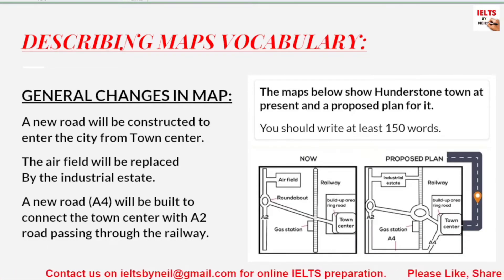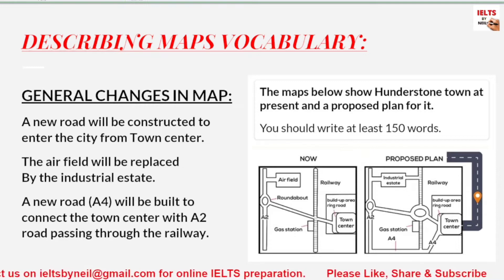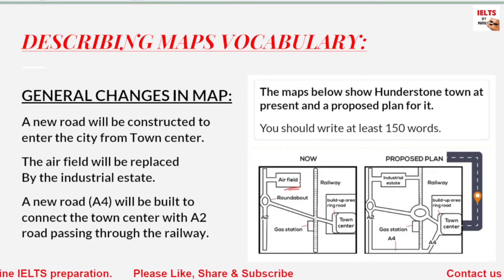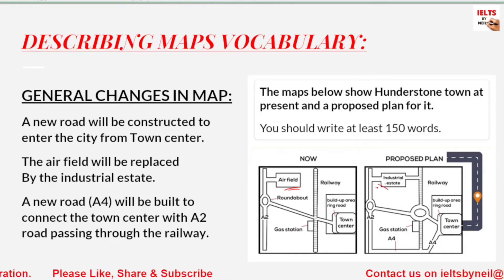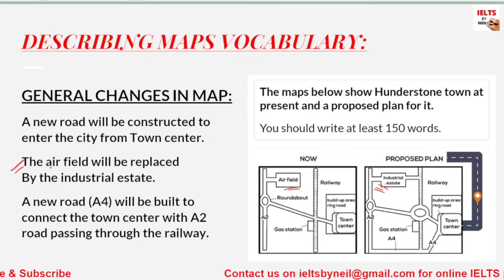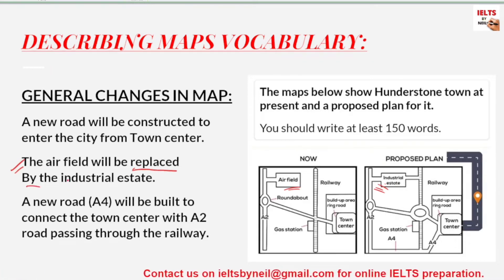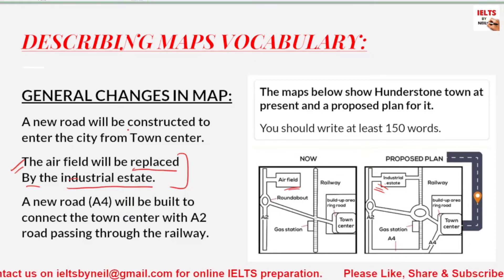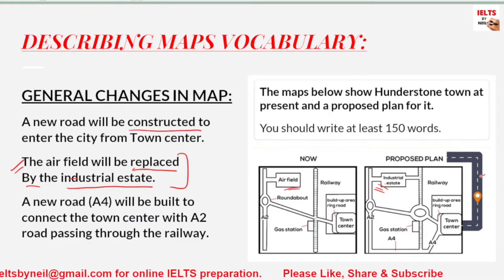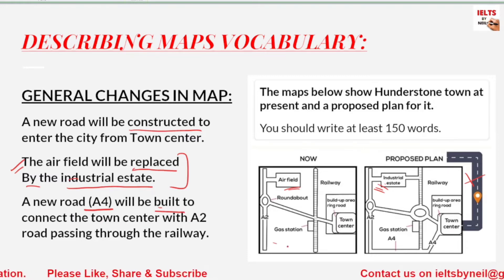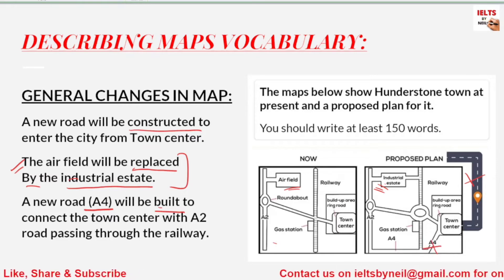Now let's look at the vocabulary you have to use, because maps require a different kind of vocabulary. For example, there was an airfield before and in the future there will be an industrial estate, so we say: 'The airfield will be replaced by the industrial estate.' Other key words include: a new road will be constructed to enter the city, or a new road A4 will be built to connect the town center. So you should know words like constructed, built, and replaced.